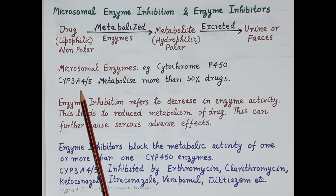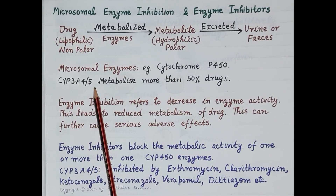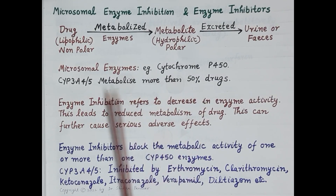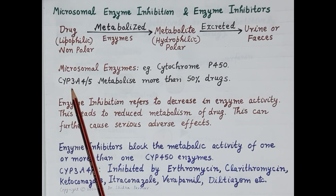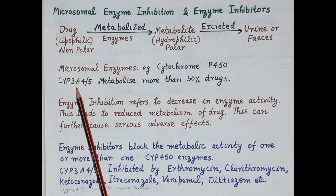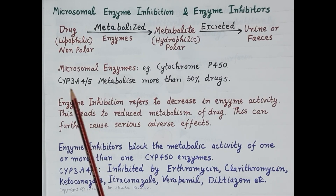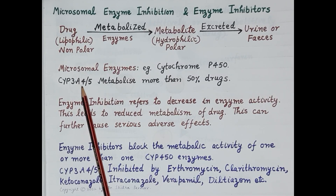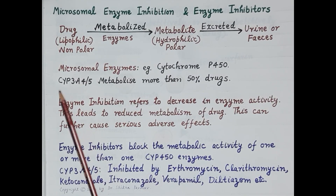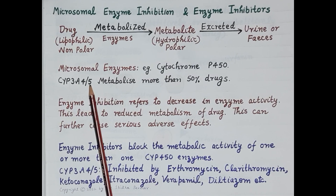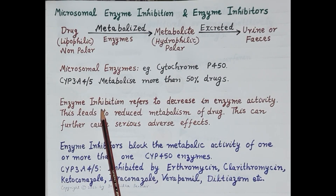Cytochrome 3A4 and cytochrome 3A5 metabolize more than 50 percent of drugs. Cytochrome P450 enzymes are grouped into families designated as 1, 2, 3, and sub-families represented by capital letters A, B, C, etc., whereas individual enzymes are designated by numbers like 1, 2, 3, 4, 5. So cytochrome 3A4 means the family is 3, the sub-family is A, and the individual enzyme number is 4. Similarly, cytochrome 3A5 has family 3, sub-family A, and individual enzyme number 5.